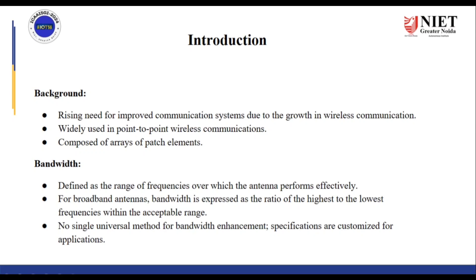What is bandwidth? Bandwidth is basically defined as the range of frequencies over which an antenna can perform effectively. For broadband antennas, the bandwidth is expressed as the ratio of the highest to the lowest frequencies within the acceptable range. It is important to note that no single universal method for bandwidth enhancement exists, and with different applications the techniques would change.